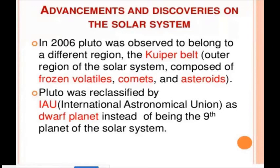So, in 2006, Pluto was observed to belong to a different region. On the outer region of the solar system composed of the frozen comet and the asteroid. So, the Pluto class was reclassified by the International Astronomical Union as a dwarf planet.